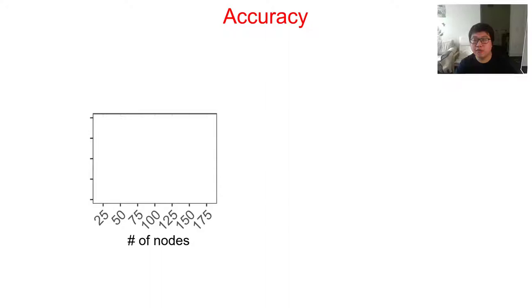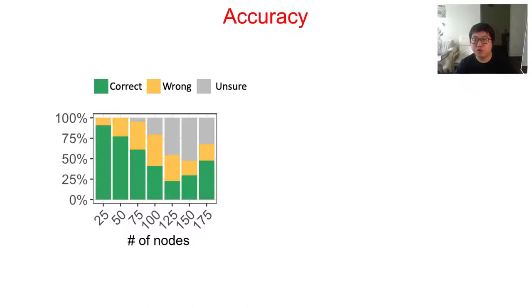We use x-axis to represent the increasing number of nodes in a graph. We recorded three types of results from our participants: correct and wrong answers. We also allow participants to choose unsure if they struggle to give an answer. The y-axis shows the percentage. We use a stacked bar chart to show the distribution of each type of responses. This figure shows how the accuracy changes in a graph density of two. Graph density is the number of links divided by the number of nodes.